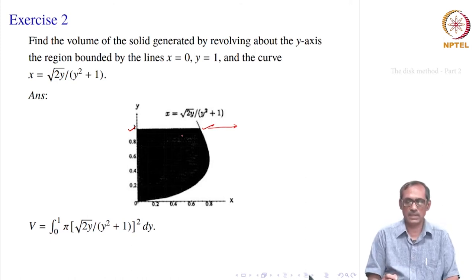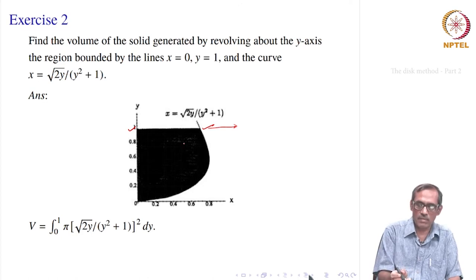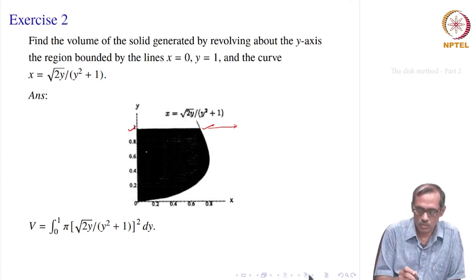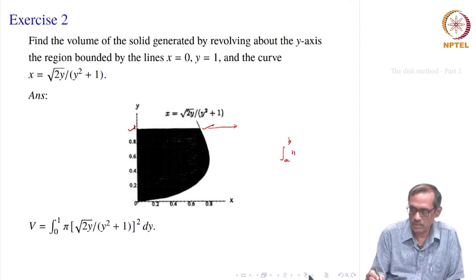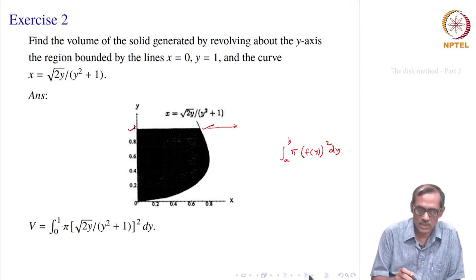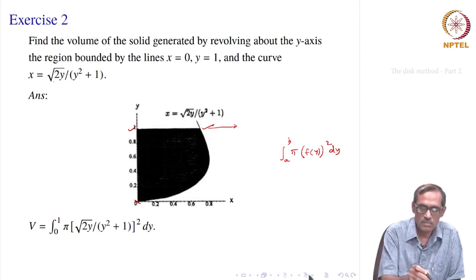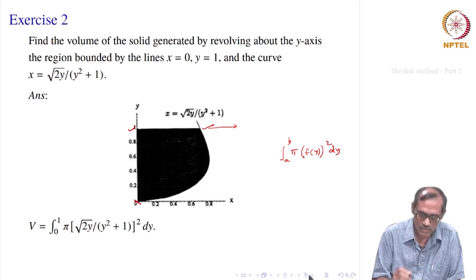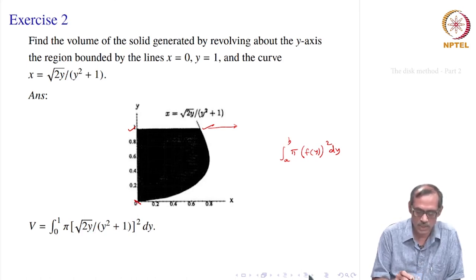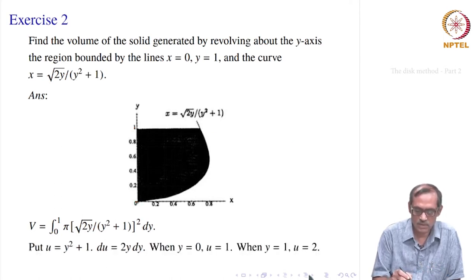The region is bounded by x = 0 (the y-axis), y = 1 (the top line), and the curve. This region is revolved around the y-axis. Using our formula, volume equals the integral from a to b of π times x² dy, i.e., π f(y)². The lower limit is found from the intersection of the curve with the y-axis, which gives y = 0. So volume = integral from 0 to 1 of π times [√(2y/(y²+1))]² dy.